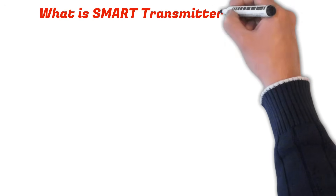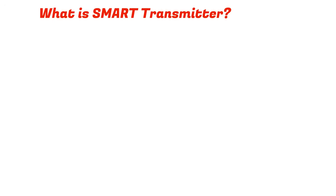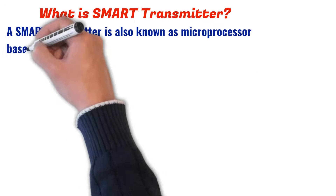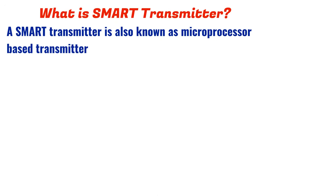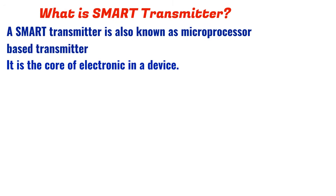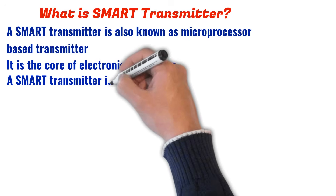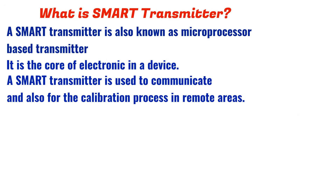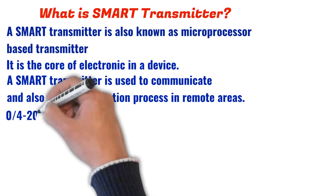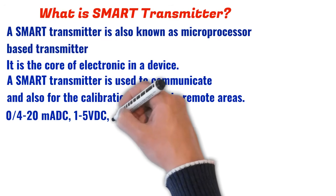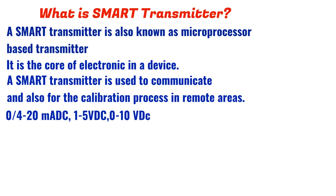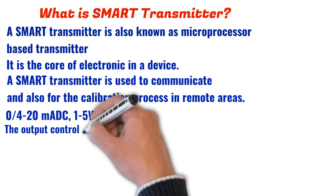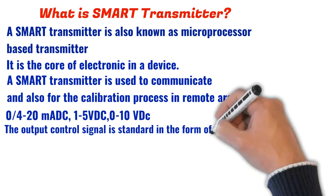The second most frequently asked instrumentation interview question is: what is a smart transmitter? A smart transmitter is known as a microprocessor-based transmitter — it is the core of electronics in a device. The most common function of a smart transmitter is to communicate, and it is also used for the calibration process in remote areas. A smart transmitter sends a unified standard signal such as 4 to 20 mA DC, 1 to 5 V DC, or 0 to 10 V DC, and the output control signal is standard in the form of 4 to 20 mA.